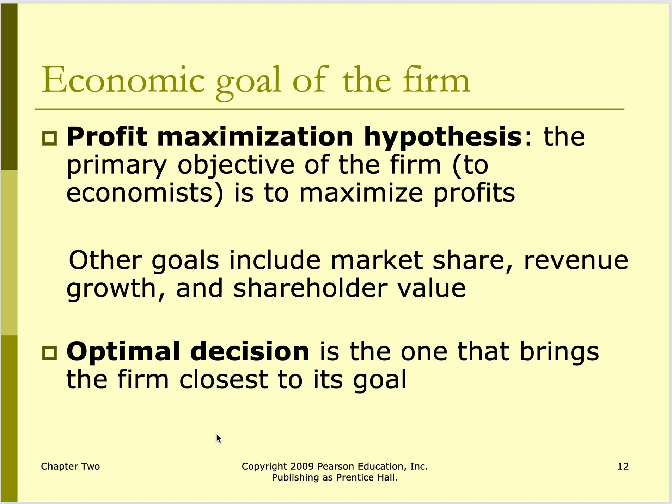Profit maximization is a hypothesis. The optimal decision is one that brings a firm closest to its goal. It's easy to do a linear programming problem where the goal is profit maximization and you find the right mix of products, but a modern corporation is much more complicated. You never really know if they've maximized their profits — you can show profits have increased over time, but you don't know at any given time if you're actually at the maximum.